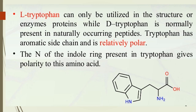This is the structure of tryptophan. Tryptophan contains an aromatic chain and an indole chain; it is a relatively polar molecule. Based on its structure, we can classify tryptophan into L-tryptophan and D-tryptophan. Here we are focusing on the production of L-tryptophan, which has a wide variety of uses.